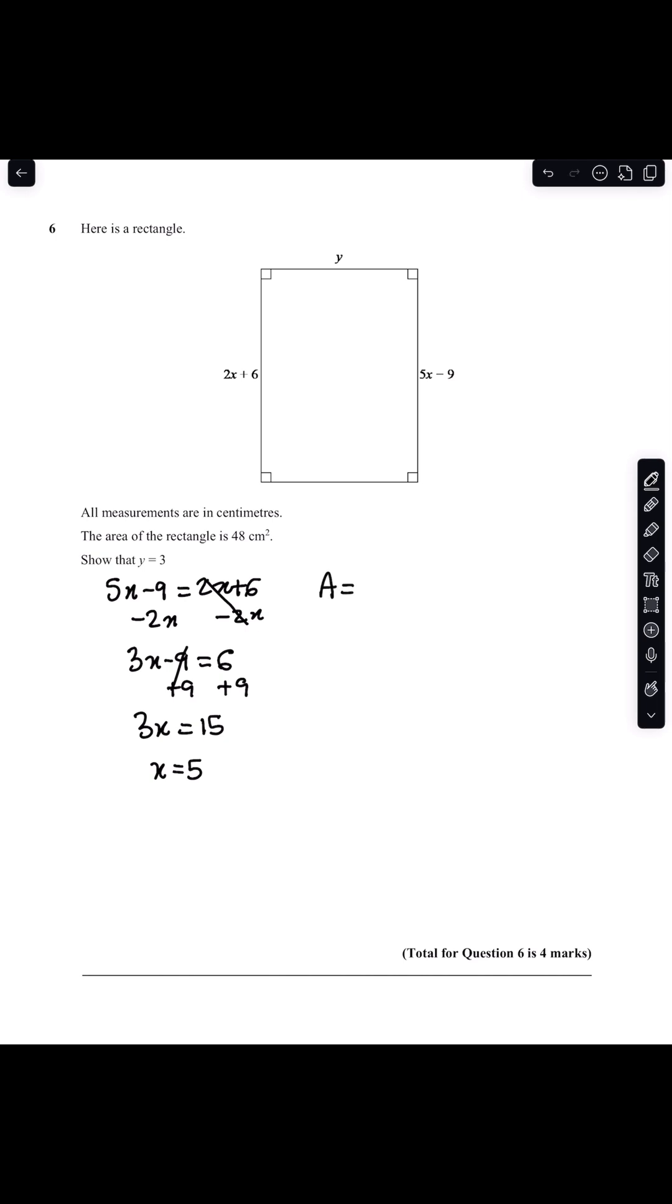The area of a rectangle simply equals your length times your width, so in this case y multiplied by 2x plus 6 will equal 48.